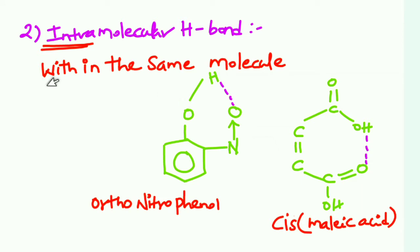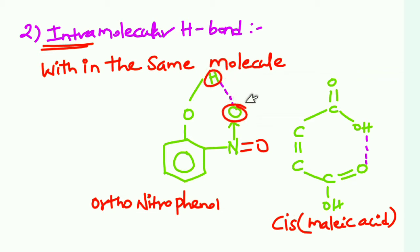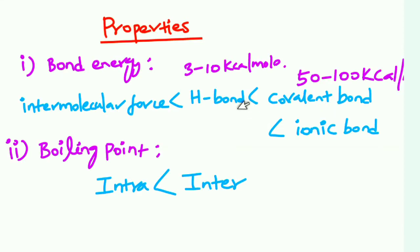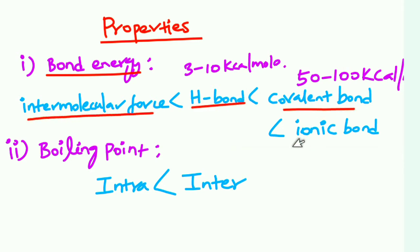Intramolecular hydrogen bond occurs within the same molecule — one compound. The hydrogen bond is formed within the one compound. That is intramolecular hydrogen bond. Now, this is cysmalic acid as an example of intramolecular hydrogen bond.